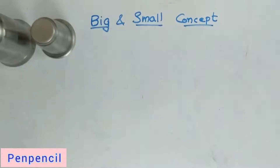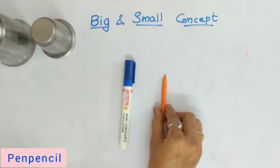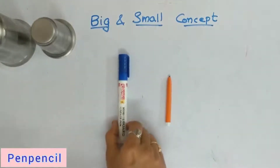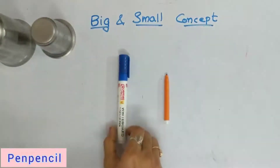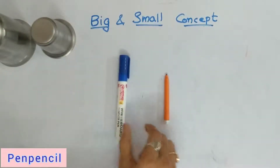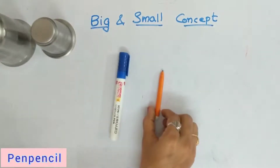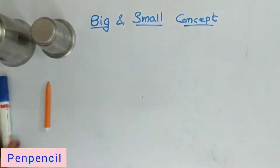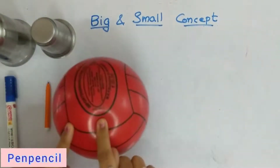Now we'll see one more. This is a big pen, this is a small pen — bigger and smaller. See the size of it: bigger pen, smaller pen. Now we'll see a ball — this is a big ball.